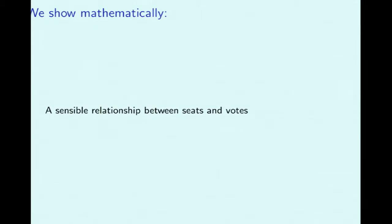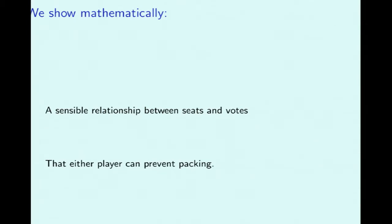We have a paper where we analyze this in various simple models. We showed that there's a sensible relationship between seats won and votes cast for each party — unlike districting in general, where a party with 51% of the vote could theoretically win every seat. We also showed that either player can prevent packing of voters: if the blue player tries to pack a group of voters into one district, we showed the red player has a strategy to prevent that population from being packed into one or even a few districts.